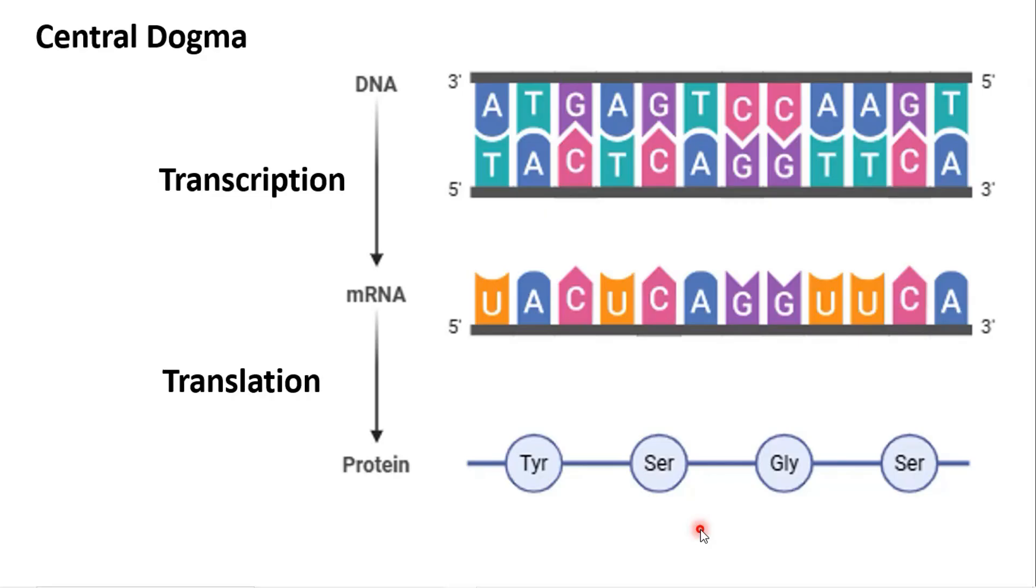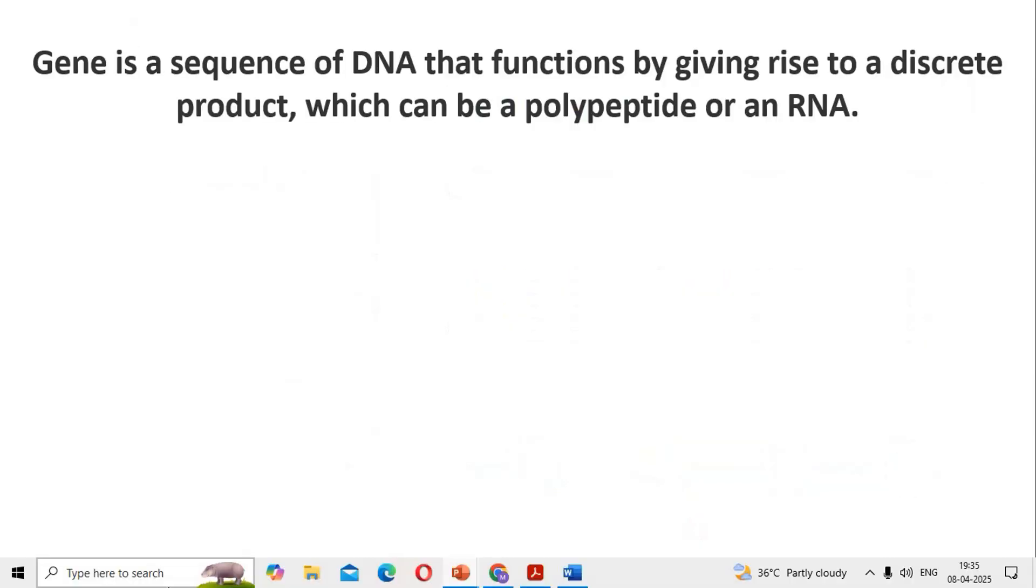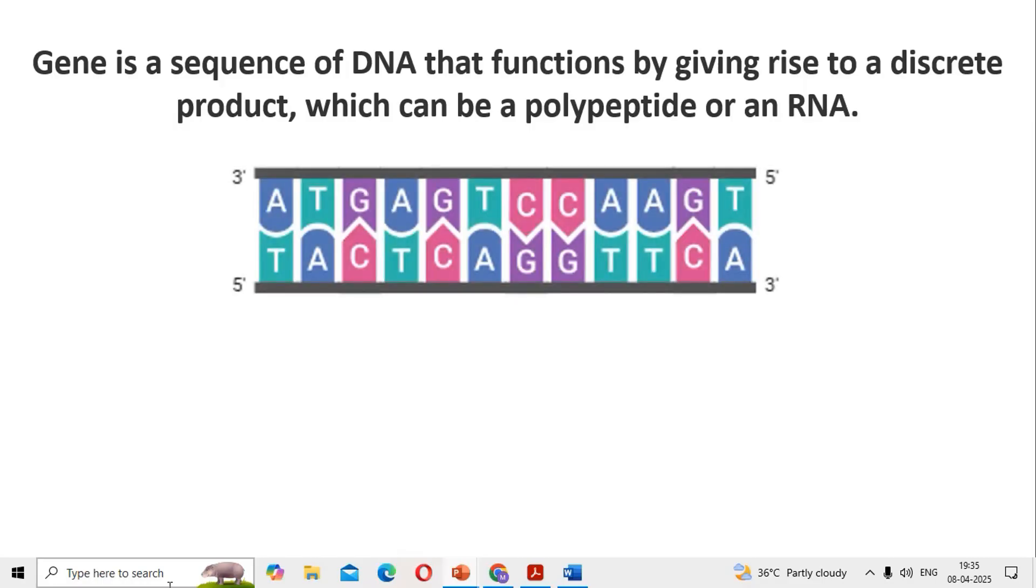So we know that proteins are important molecules and they are coming out of a central process called the central dogma. Now let's come to the definition of gene. A gene is a sequence of DNA that functions by giving rise to a discrete product which can be a polypeptide or an RNA molecule.